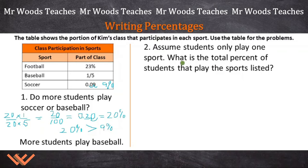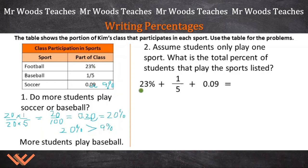Question number two: assume students only play one sport. What is the total percent of students that play the sports listed? We need to add all of this up. We have 23% for football, one fifth for baseball, and 0.09 for soccer. How do we add all of that up?